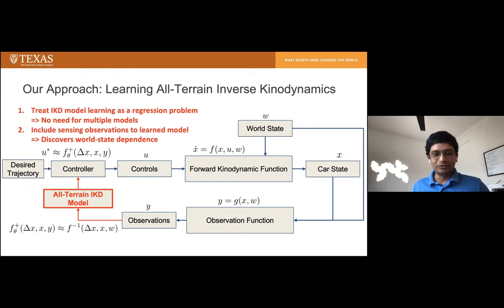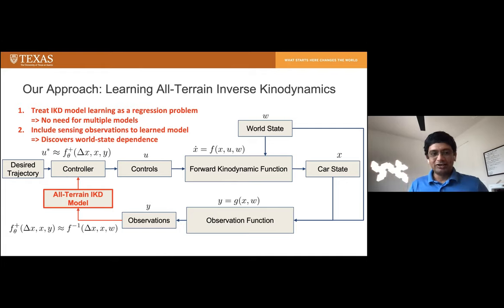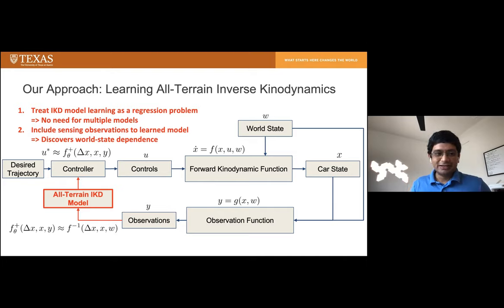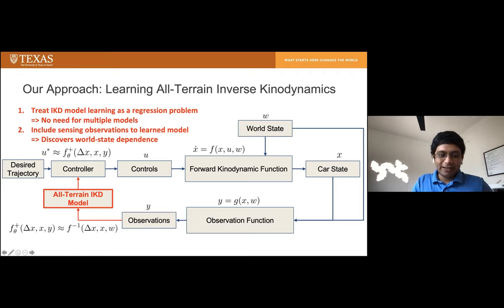What we're going to do is learn an all-terrain inverse kinodynamic function, doing away with the necessity of requiring multiple models. The key is including sensing observations as inputs to this inverse kinodynamic function, which allows it to discover world-state dependence. Internally, this approximate model doesn't know the true world state w, but it has observations y, and it needs to build an observer to make these unknown effects learnable.